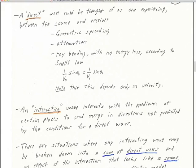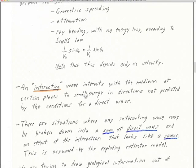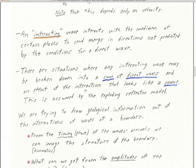Let's define a direct wave as one that experiences between the source and receiver only geometric spreading, attenuation, and ray bending according to Snell's law with no energy loss. All of these effects depend only on the velocity. That's category one. Category two are interacting waves — I'd better talk about those when we meet tomorrow.